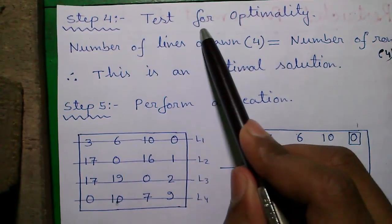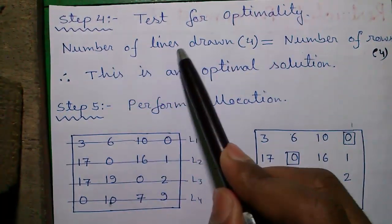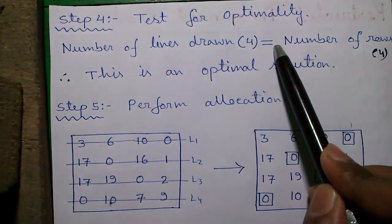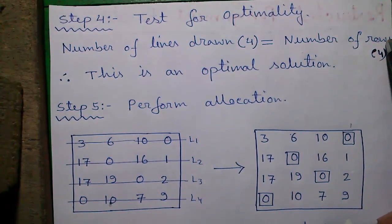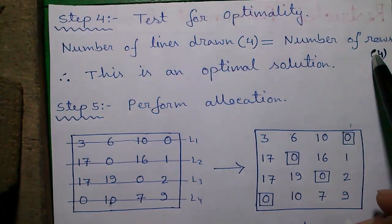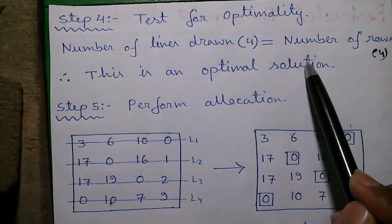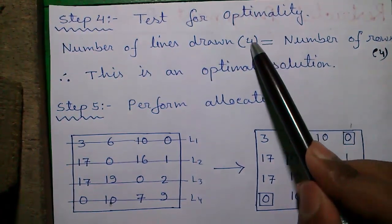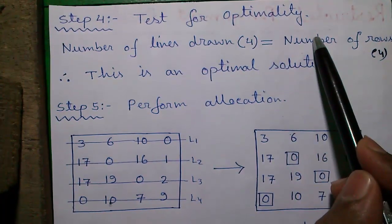Step 4: Test for optimality. The number of lines drawn equals 4, equals to the number of rows. Here there are 4 lines and number of rows are also 4. So this is an optimal solution. If these two values don't match then non-optimal solution.